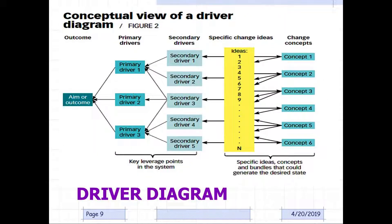So here's what a conceptual view of a driver diagram looks like. You can see what the aim or outcome is that you desire, and what the primary drivers and secondary drivers are, the specific change ideas, and the change concepts. So as you can see, the primary and secondary drivers are the key leverage points in the system, and the specific change ideas or change concepts are the specific ideas and concepts and bundles that could generate the desired state.